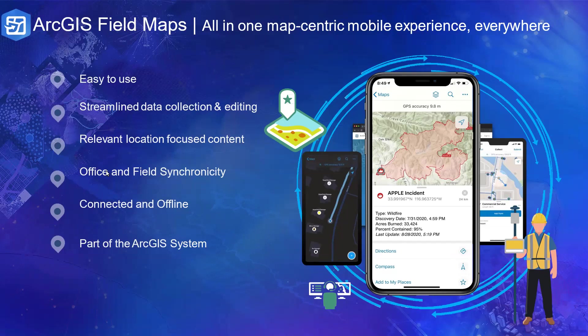Another advantage of ArcGIS Field Maps is that the data is current — updating 24/7. Whenever someone adds data on the mobile phone, it's added to the system immediately. Whether you're looking at a dashboard or a web map, everything benefits from the most recent data added. Whatever you're seeing is what has been added in the system, and that is key for transparency in field activities.